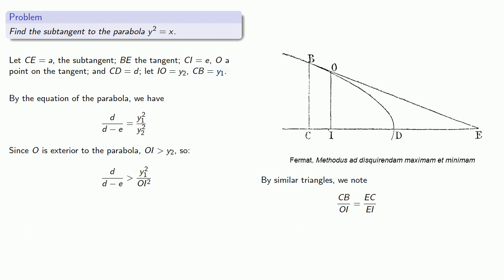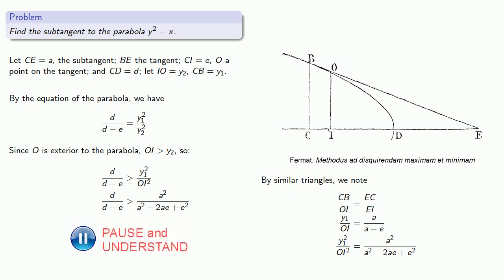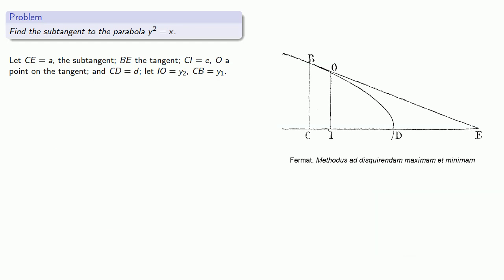Well CB is just y1, so we have y1 is to OI as a is to a minus e, or squaring both sides. And so d is to d minus e is greater than a squared is to a squared minus 2ae plus e squared. Or we can cross multiply to obtain the inequality.